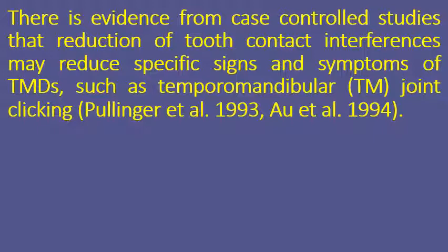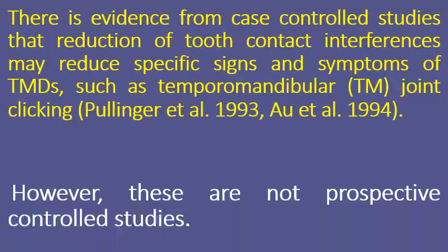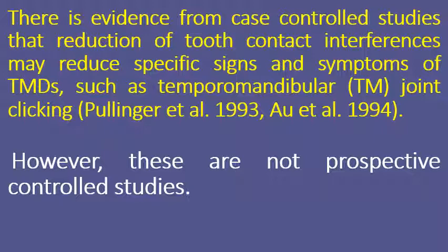Previous studies say there is evidence from case-controlled studies that reduction of tooth contact interference may reduce specific signs of TMJ joint clicking. However, there is controversy and contradiction in the studies. Most studies are not prospective controlled studies. In epidemiology, there are retrospective and prospective studies. If you follow the patient for 10 years and symptoms of TMJ improve, those are well-controlled studies.